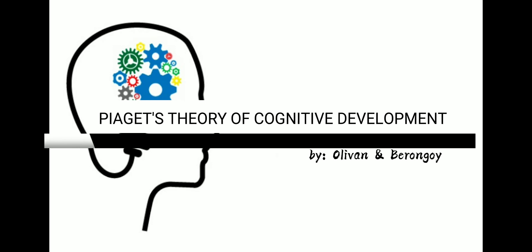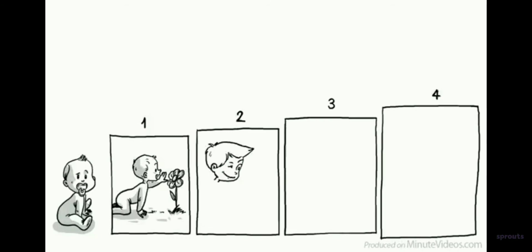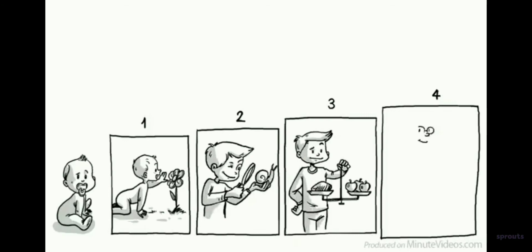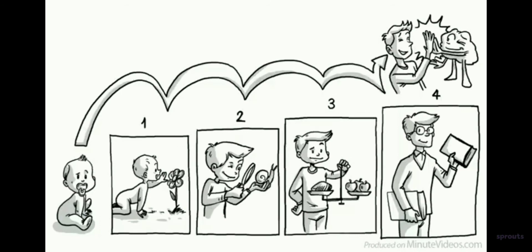Piaget's theory argues that we have to conquer four stages of cognitive development. First, the sensorimotor stage. Second, the pre-operational stage. Third, the concrete operational stage. Fourth, the formal operational stage. Only once we have gone through all these stages — at varying ages — are we able to reach full human intelligence.